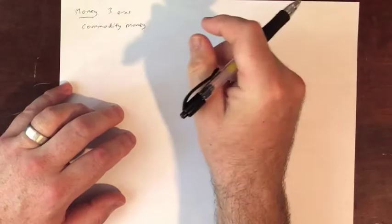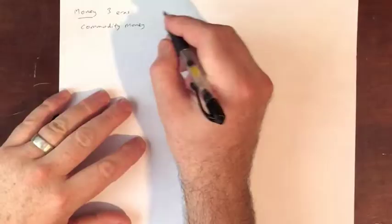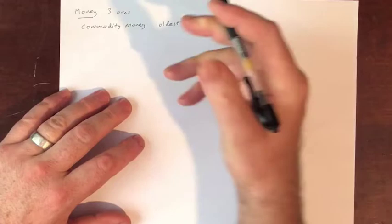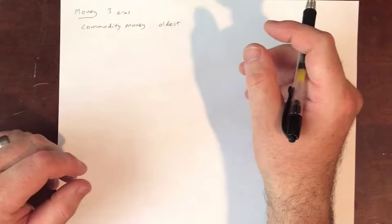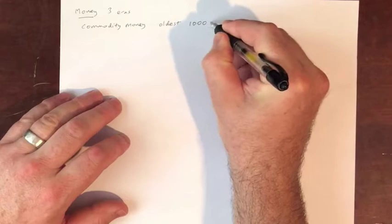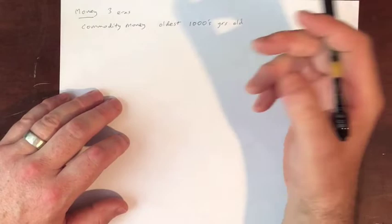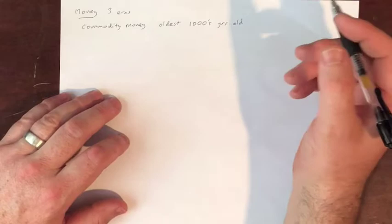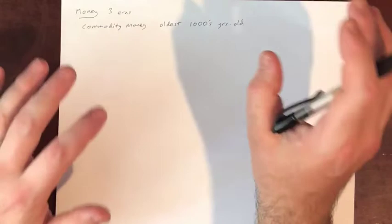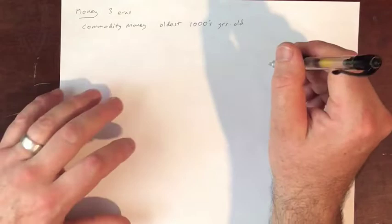Commodity money is the oldest historical form of money. When we talk about different historical eras of money, commodity money is the oldest by far — thousands and thousands of years old. In fact, it goes back to probably before recorded history. Some of our oldest historical records were financial records, so we know that money was being used even before things were being written down.